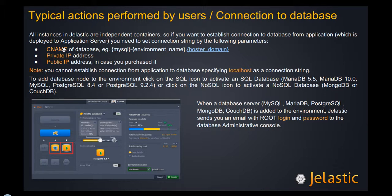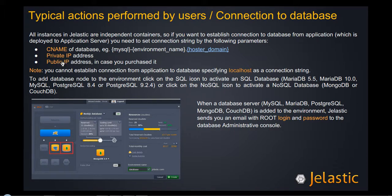Here is a set of ways it's possible to set a connection to the database. First of all, it's possible to do so by means of specifying the CNAME of the database — it will look like, for example, the database type (in this example, MySQL), then dash, environment name, dot, hosted domain. It's also possible to get a connection established by specifying a private IP address, which you can find opposite to the database instance. And similarly, if a public IP is attached, it's also possible to make a connection over the public IP.